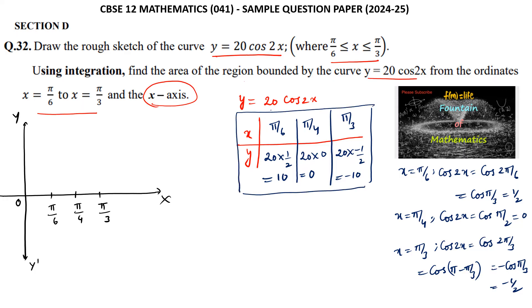On the graph: when x = π/6, y = 10, giving the point (π/6, 10). When x = π/4, y = 0. And when x = π/3, y = −10, giving the point (π/3, −10). Since we know this is the region between π/6 and π/3, this is the graph we consider.